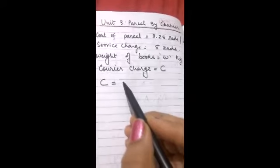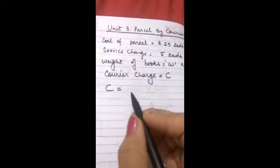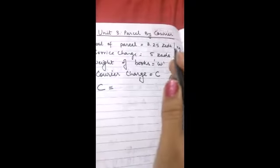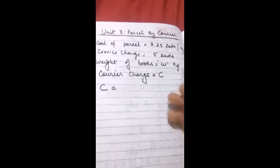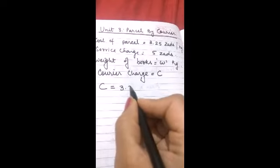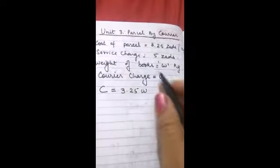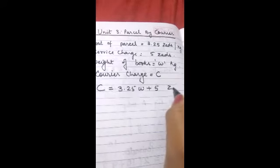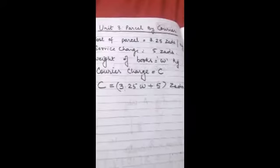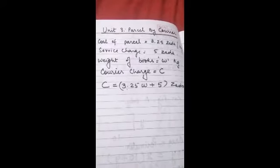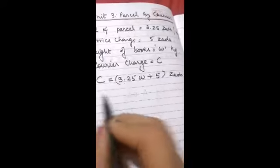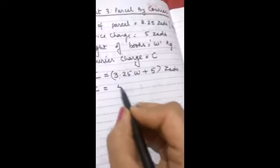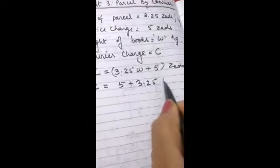So the courier charge C will be equal to 3.25 Zs is for 1 kg and total it is W kg. So it will be 3.25W multiplied and the fixed service charge is always there plus 5 Zs. So this should be the courier charge. Thus option B which is given as C equal to 5 plus 3.25W is the correct answer.